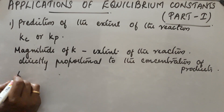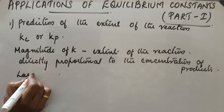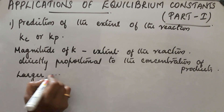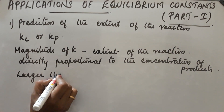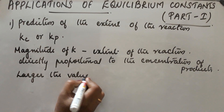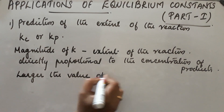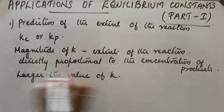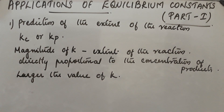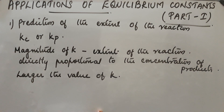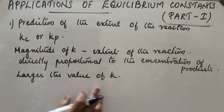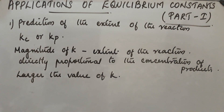So, larger the value of K, greater will be the concentration of products — meaning the reaction almost goes to completion. From the K value, we can find the extent of the reaction.